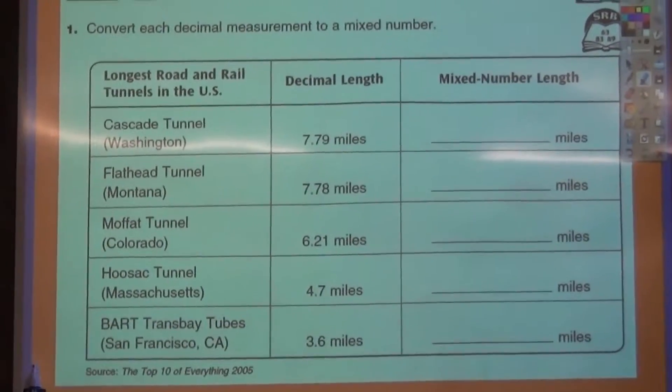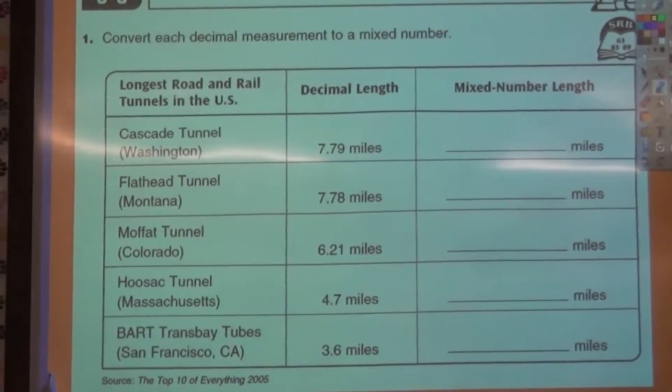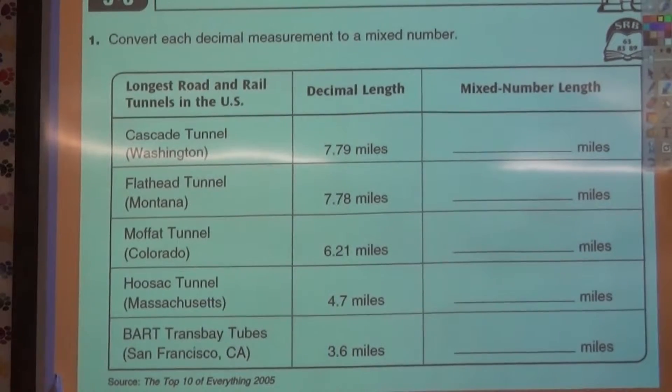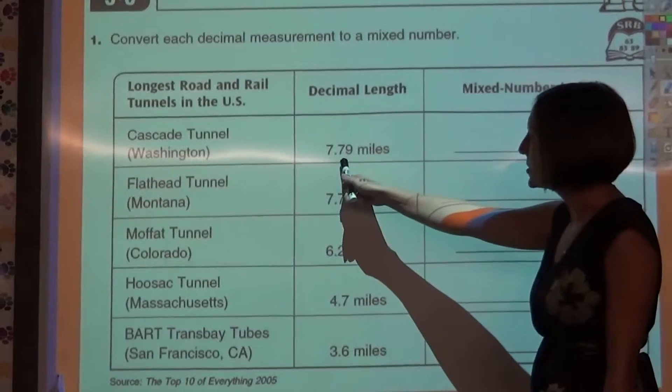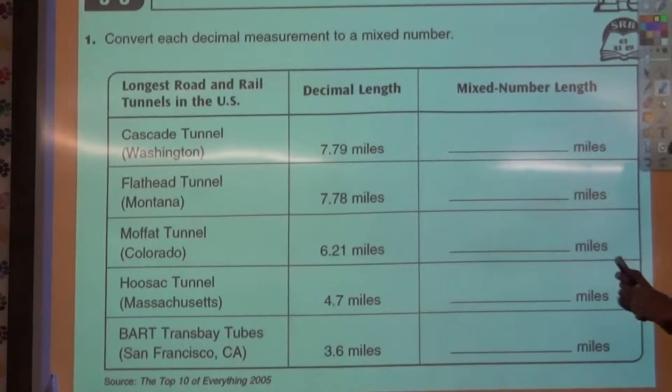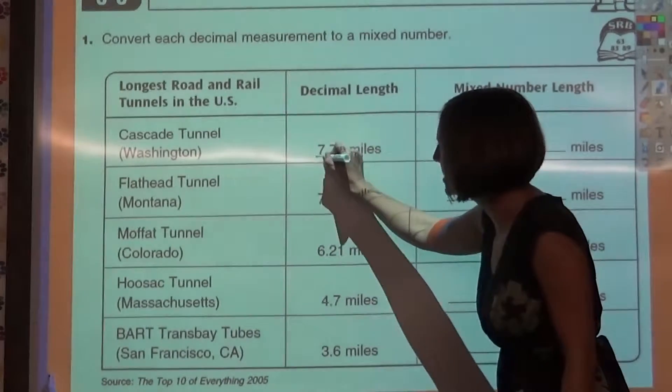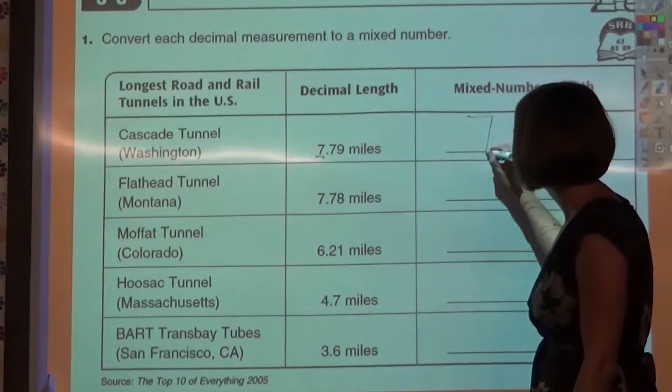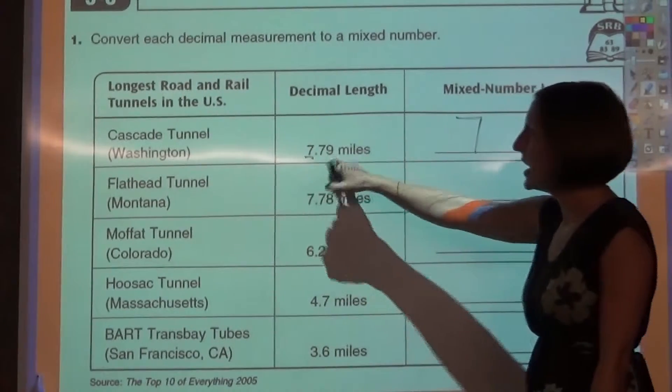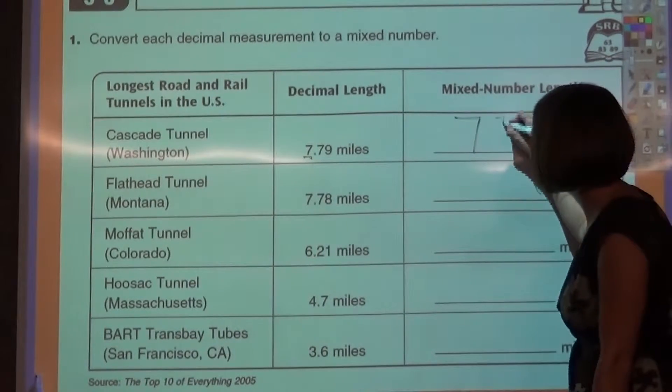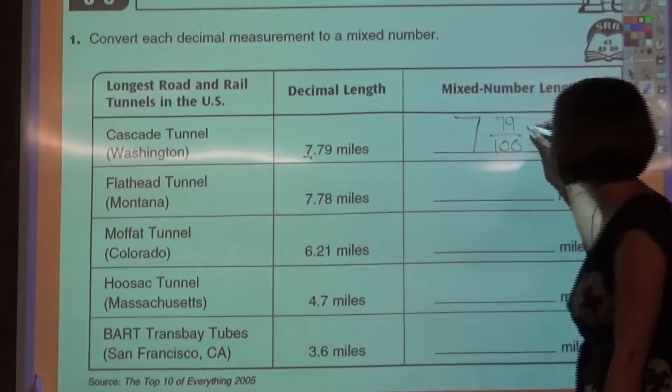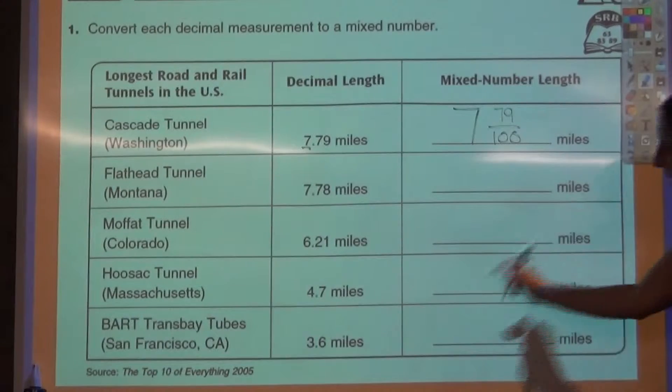Now, let's take a look here at making decimals into mixed numbers. You'll have this on your study link at the end of the lesson today. And you'll have to take decimals such as 7 and 79 hundredths and write it as a mixed number. So I know that this first 7 is my whole number, because that's in the ones place. The 79 hundredths, I know by the way I say that, that I can do 79 over 100. 7 and 79 hundredths.